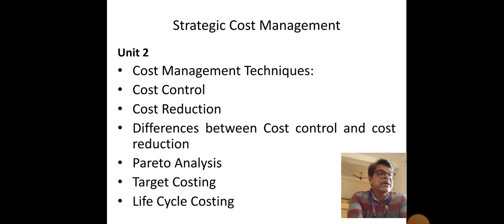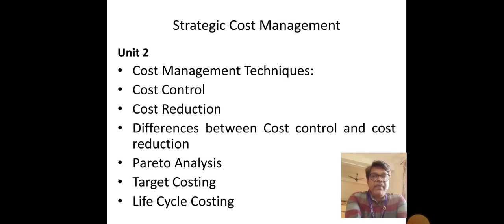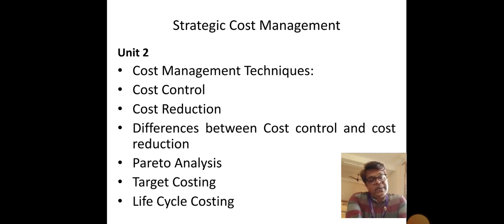At the saturation stage, possibilities still exist for improving demand for our commodity. We can give free samples, conduct campaigns, offer buy-one-get-two deals, or run advertisement campaigns to improve demand. Likewise, based on the stage in which a product or service is living, we can select appropriate strategies for improving profitability as well as productivity. Thanks a lot, have a nice day.